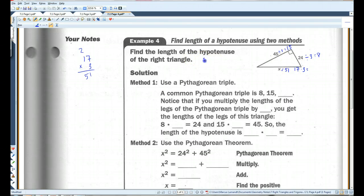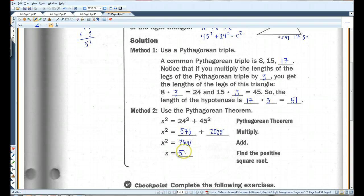Now, if you don't see that, then you could just go ahead and use the Pythagorean theorem. 45 and 24 are kind of big numbers to have to multiply, but that's another way you can do it. It just takes a little bit longer. A common Pythagorean triple, 8, 15, 17. We just figured that out. Notice that if you multiply the lengths of the legs by 3, you get the lengths of the legs of the triangle. 8 times 3 is 24. 15 times 3 is 25. So, the length of the hypotenuse is 17 times 3, which we already figured out is 51. Now, this is the other way. 24 squared is 556. 45 squared is 2025. You add them together, you get 2601. You take the square root, you get 51. This also gives you the answer. It's just longer, and you have to deal with bigger numbers.